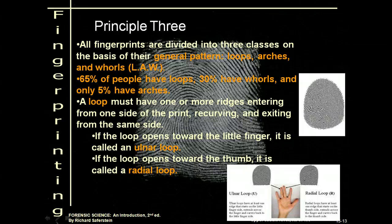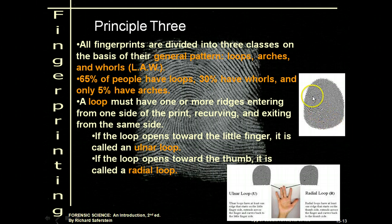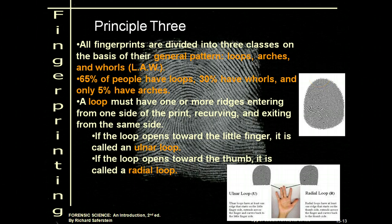A loop must have one or more ridges entering from one side of the print, recurving, and exiting from the same side. Looking at the fingerprint, the lines enter from the right-hand side, loop around, and exit on the right-hand side. If the loop opens towards your pinky finger, that is called an ulnar loop. If the loop opens towards your thumb, that is called a radial loop.